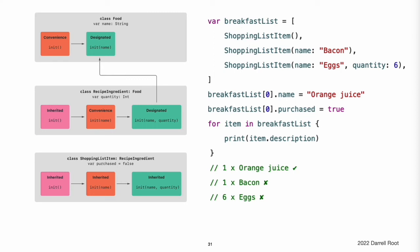A new array called breakfastList is created from an array literal containing three new ShoppingListItem instances. The type of the array is inferred to be Array of ShoppingListItem. After the array is created, the name of the ShoppingListItem at the start of the array is changed from [unnamed] to orange juice, and it is marked as having been purchased. Printing the description of each item in the array shows that their default states have been set as expected.